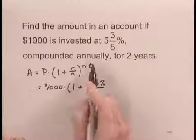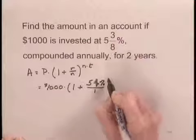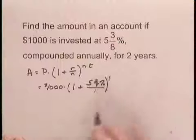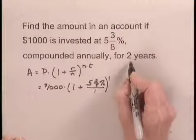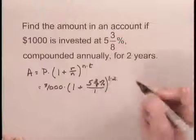And this is compounded annually. So there's one compounding period per year. So we'll substitute 1 for N. And we substitute 1 for N up here as well. And this account is being held for two years. So we substitute 2 for T.